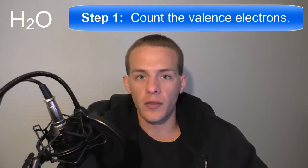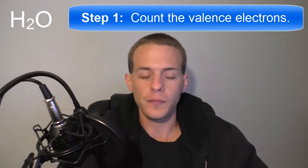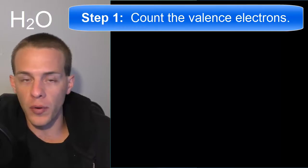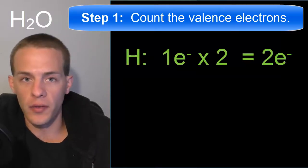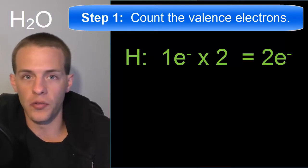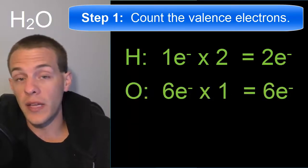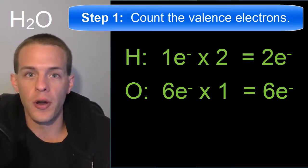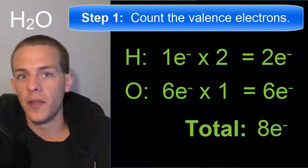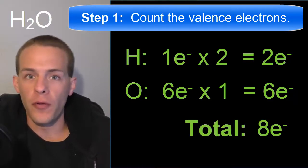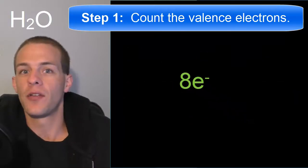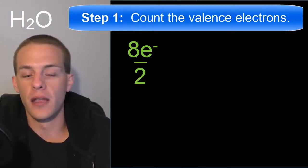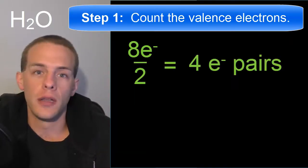The first step is to count the total number of valence electrons for all atoms in the molecule. The number of valence electrons equals the group number. Hydrogen has one valence electron, and there are two of them, for a total of two valence electrons from hydrogen. Oxygen has six valence electrons, and there's only one oxygen, adding another six. So we have a total of eight valence electrons, or four electron pairs.